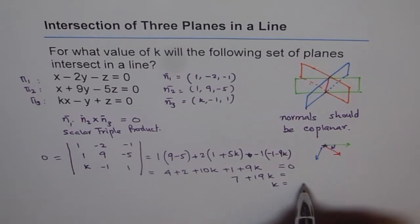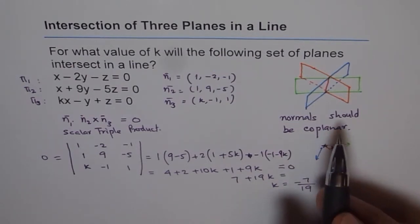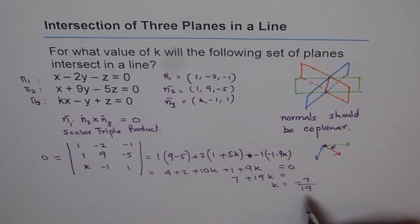So we get 7 and 10 plus 9 is 19k. And from here, k equals to -7 over 19. So that is the value of k which will satisfy this condition. And therefore, k should be -7/19 for these 3 planes to intersect in a line as shown.